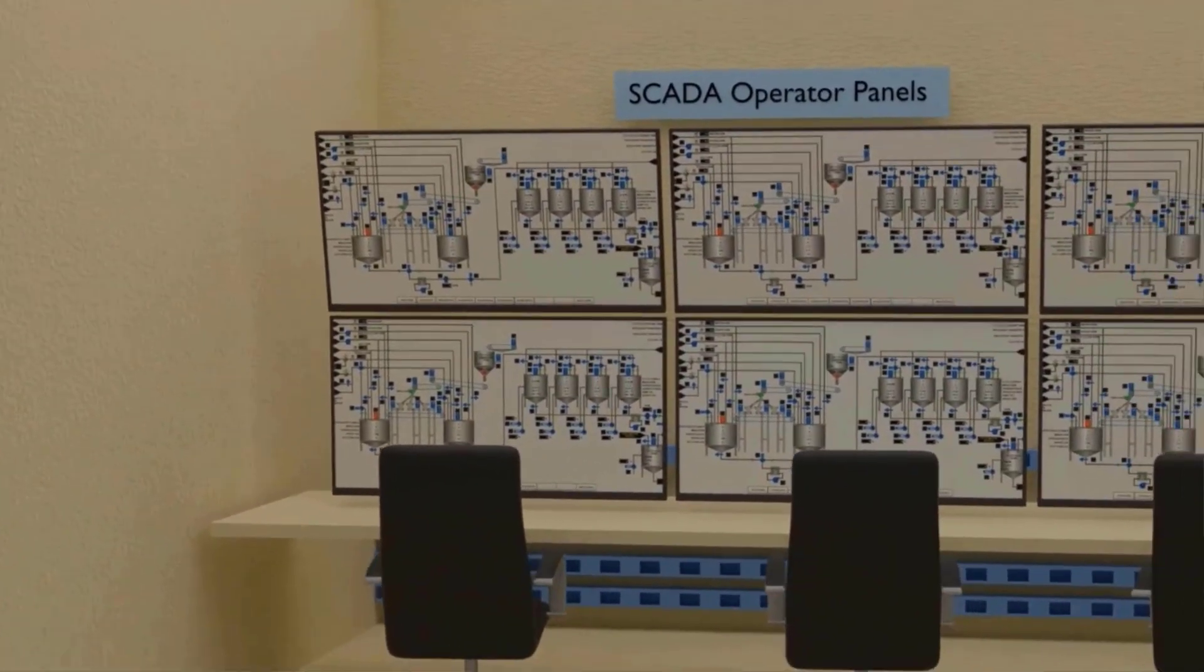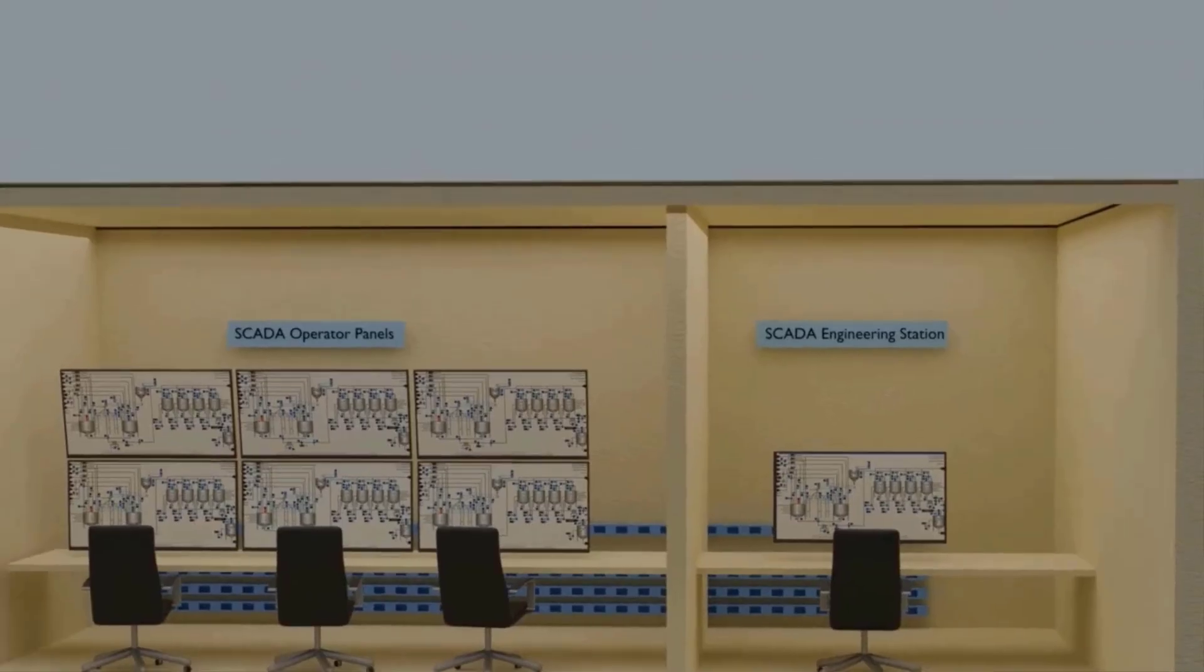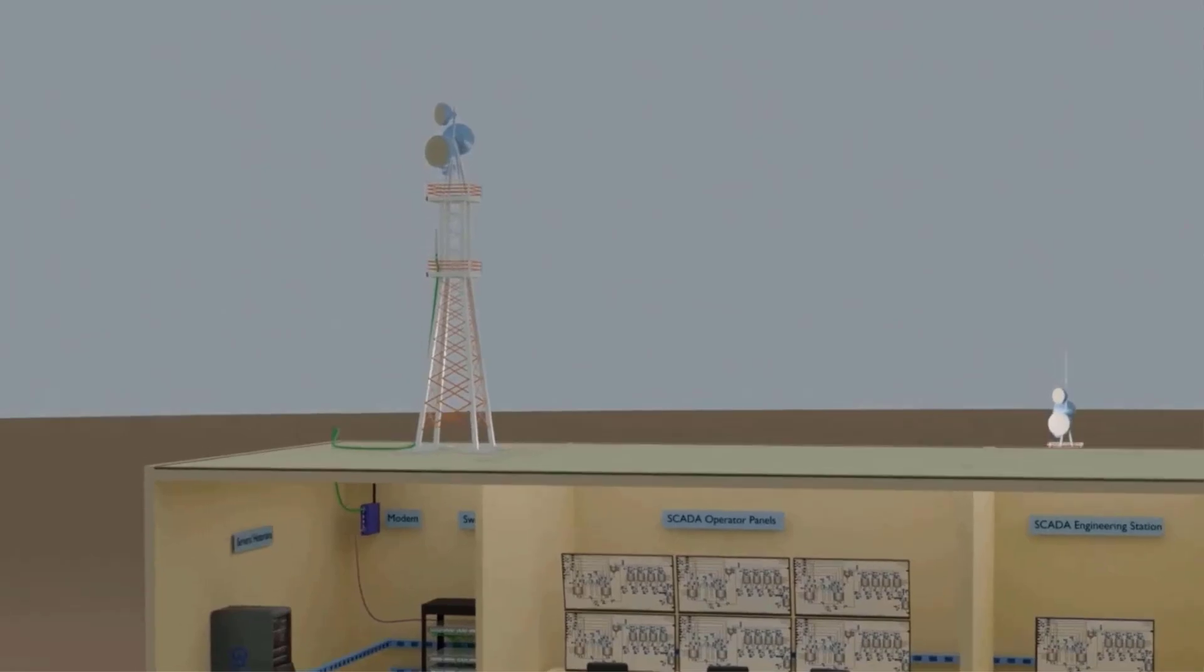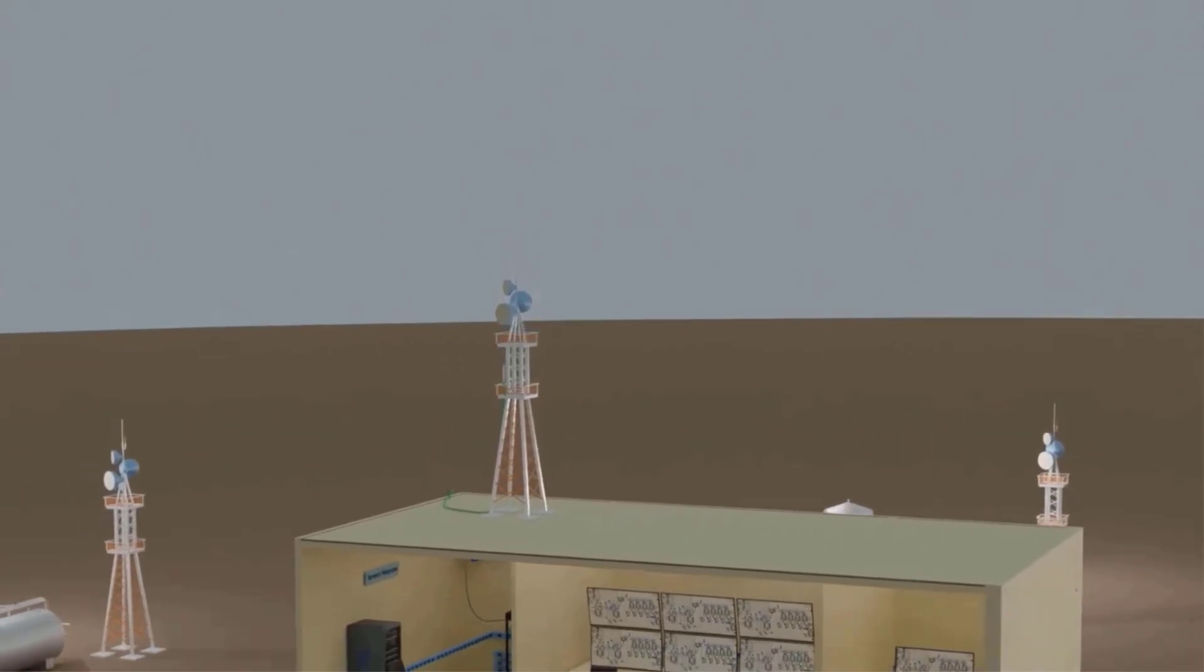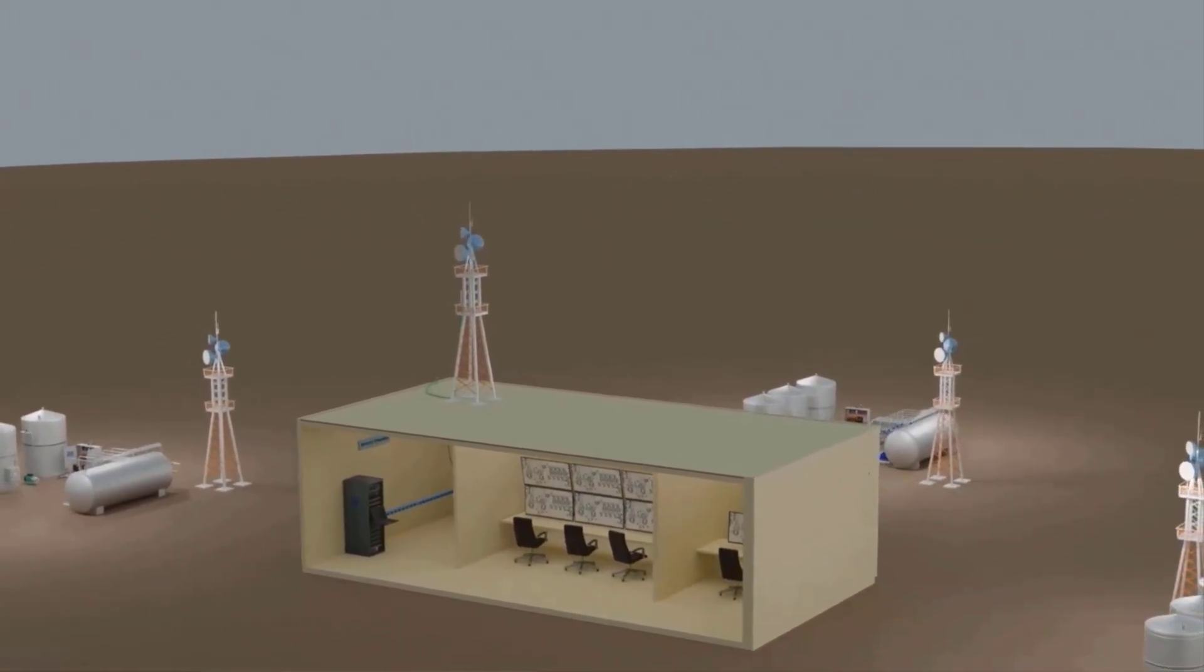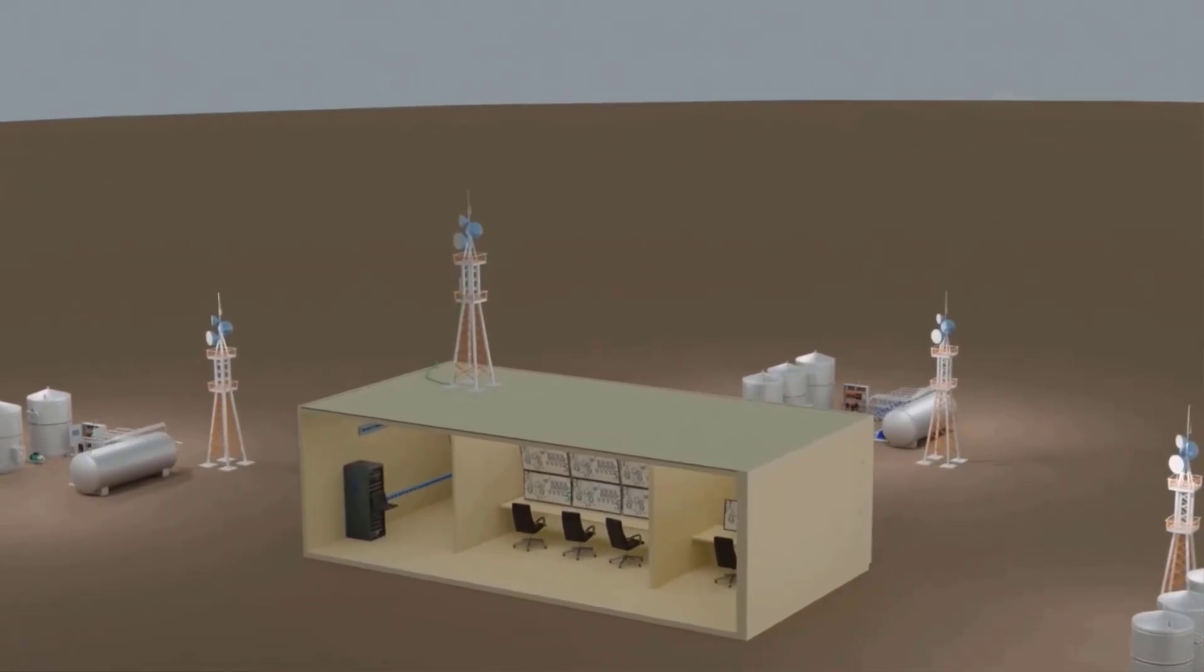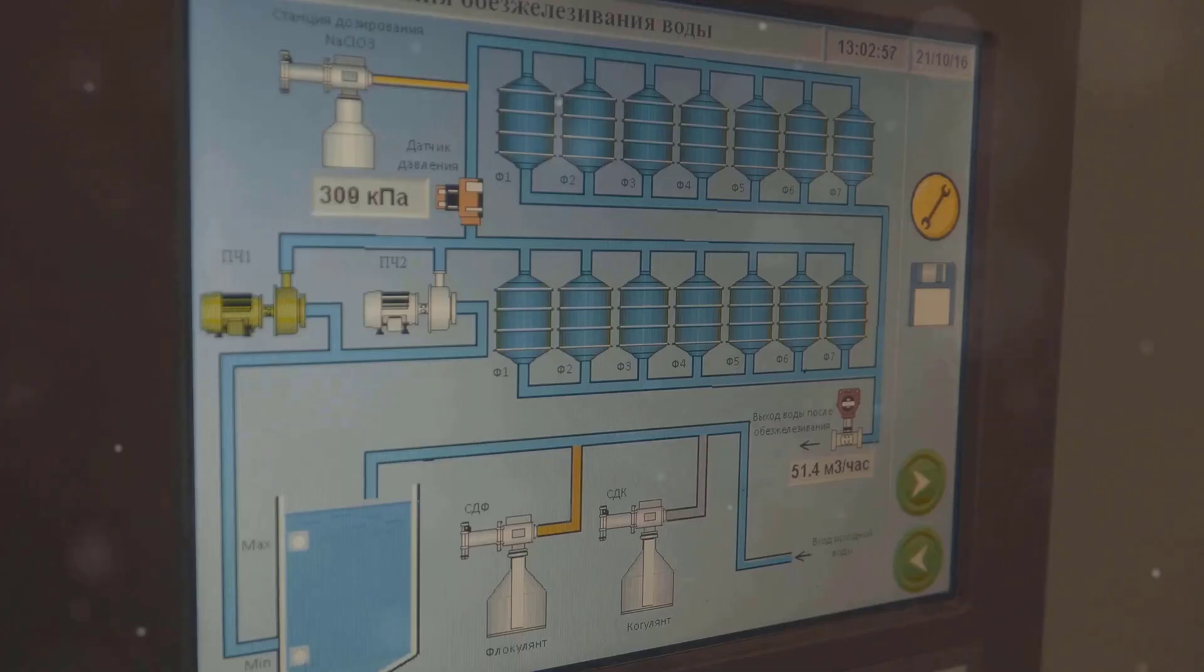Key features of SCADA: Centralized control - Monitor and control processes from a single interface. This allows for efficient management and quick response to any issues. Data logging - Records historical data for analysis and reporting. This feature is crucial for identifying trends and making informed decisions. Visual tools help operators quickly understand the status of the system and react accordingly. Remote accessibility - Supervise systems remotely using network connectivity. This ensures that operators can manage and troubleshoot the system from anywhere, enhancing flexibility and efficiency.